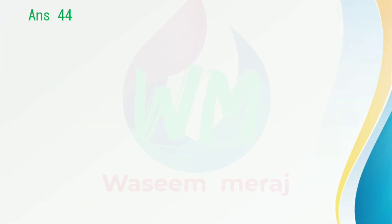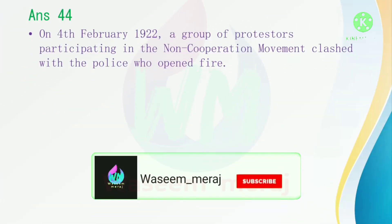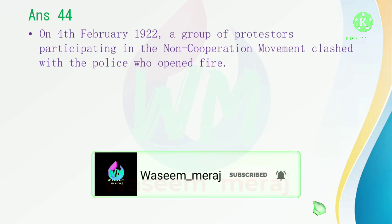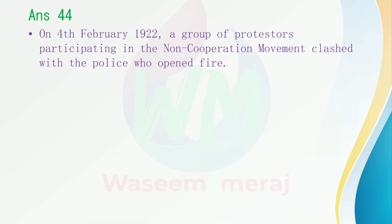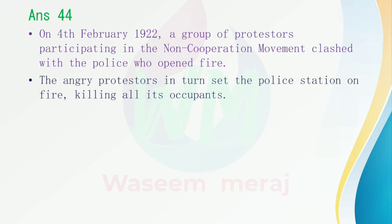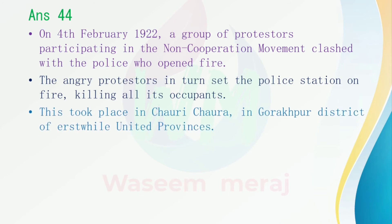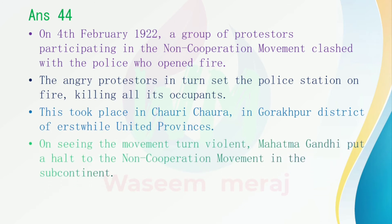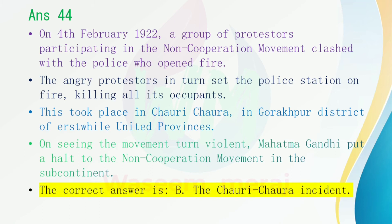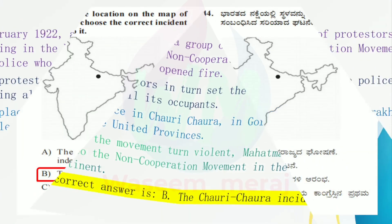Answer 44: On 14 February 1922, a group of protesters participating in the non-cooperation movement clashed with the police who opened fire. The angry protesters in turn set the police station on fire, killing all its occupants. This took place in Chowri Chowra in Gorakhpur district of the United Provinces. On seeing the movement turn violent, Mahatma Gandhi put a halt to the non-cooperation movement. So the correct answer is B — the Chowri Chowra incident.